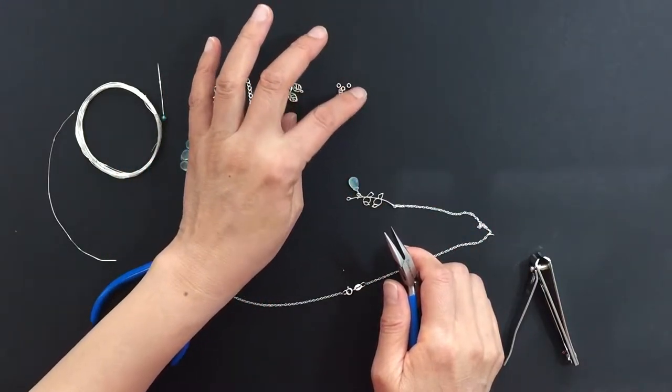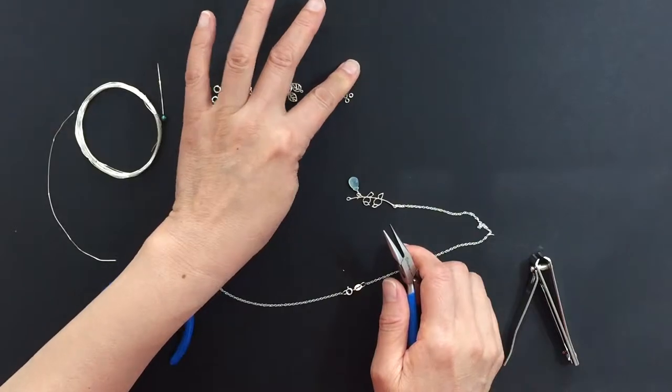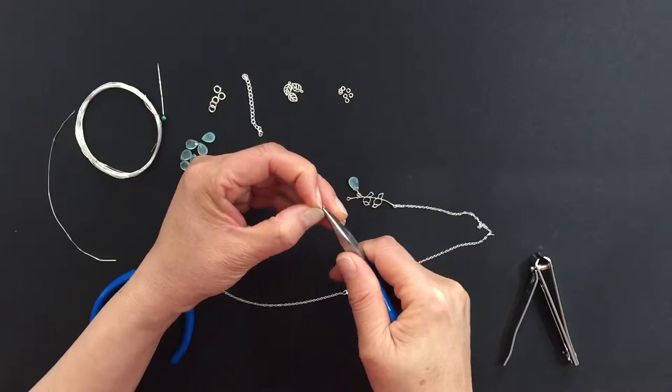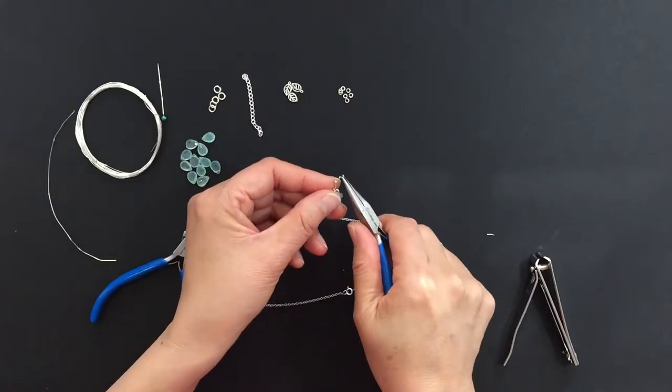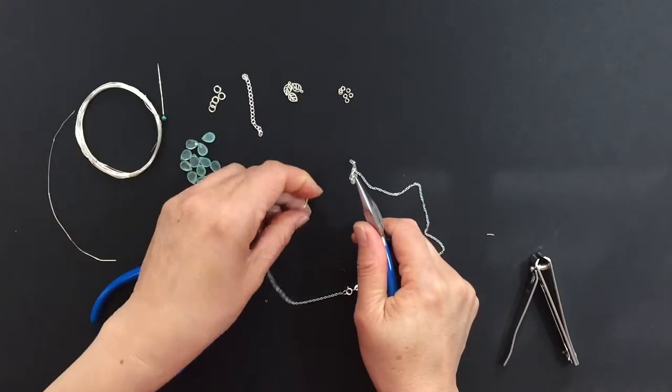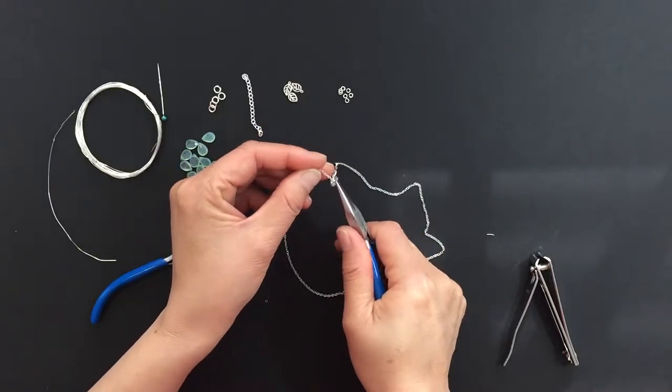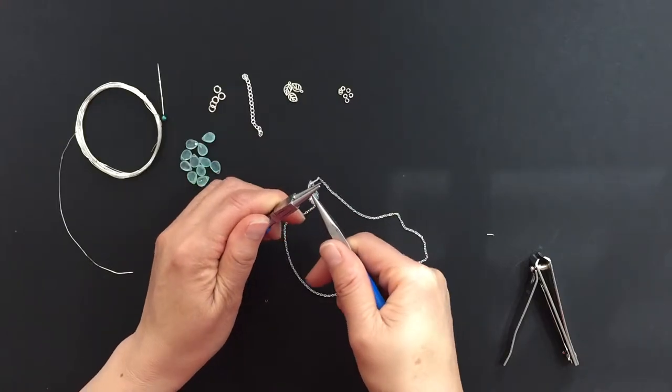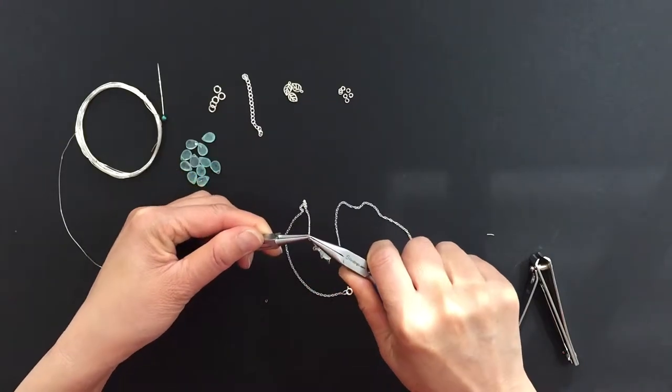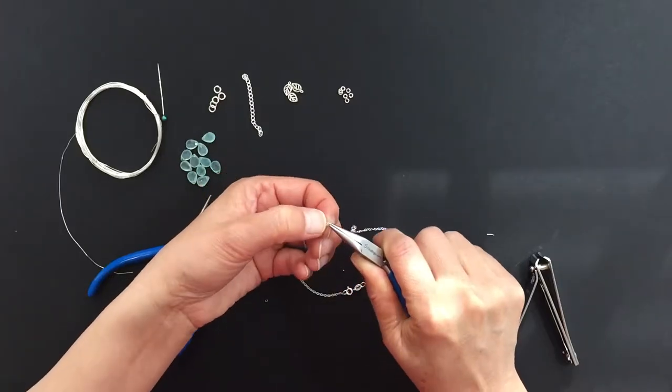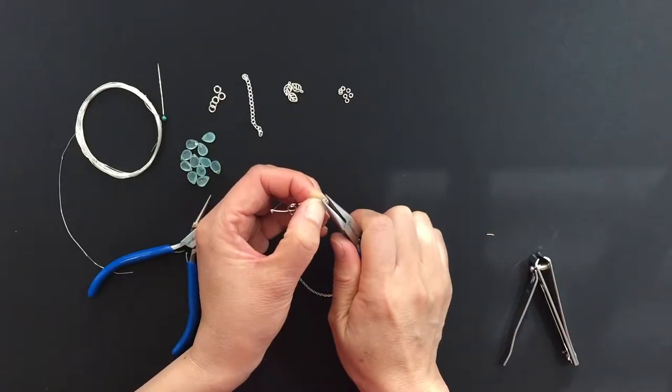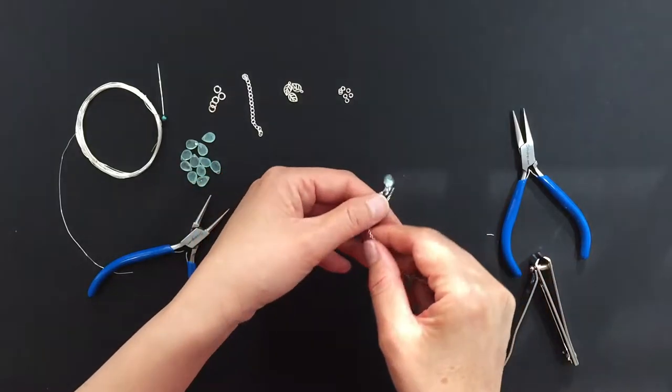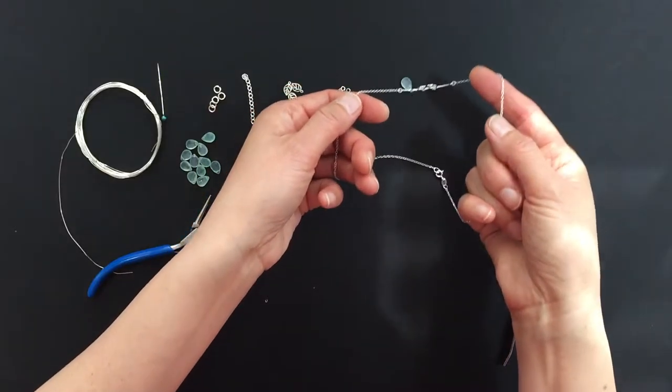Attach the other side of the connector and necklace with another 3mm 22 gauge jump ring. The main part of the necklace is now complete.